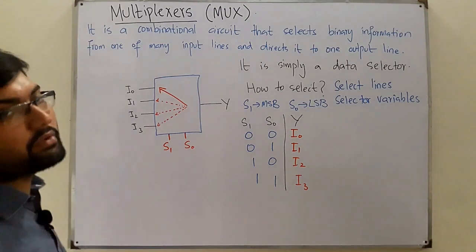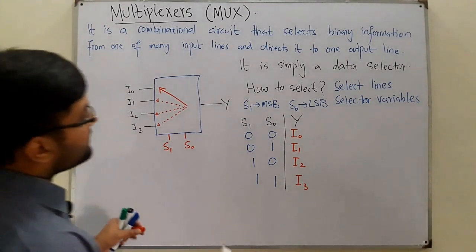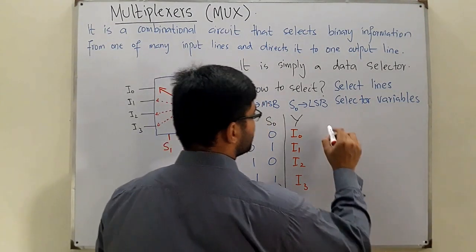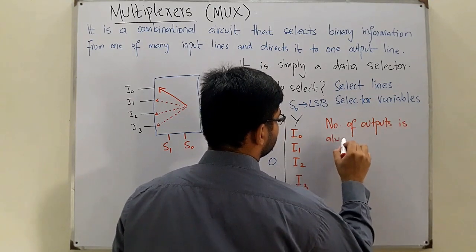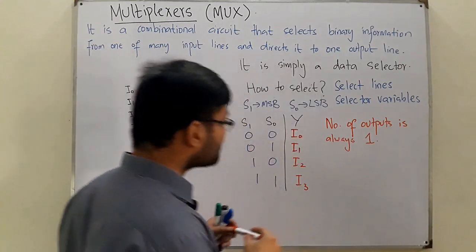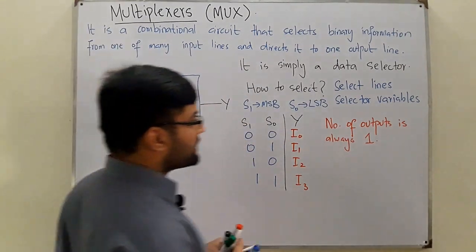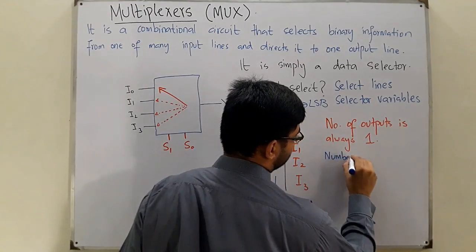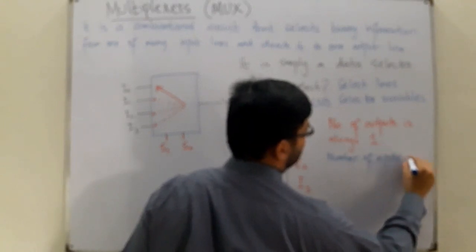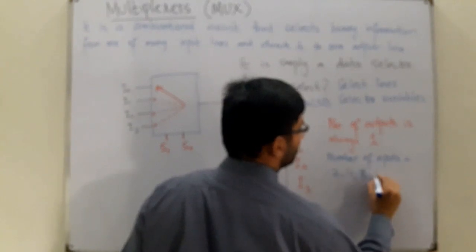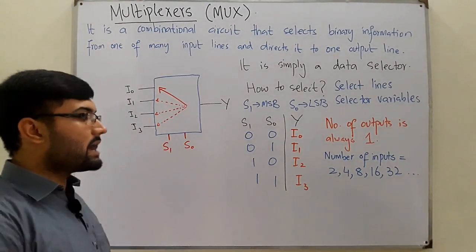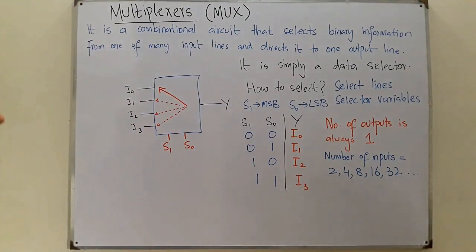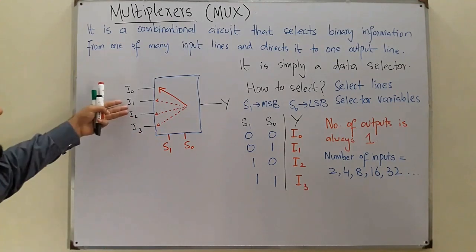We select with the help of these select lines. The number of outputs is always one. The number of inputs are powers of two — they could be 2, 4, 8, 16, 32, and so on. So we can have a 2×1 multiplexer, a 4×1 multiplexer, an 8×1 multiplexer, and so on.